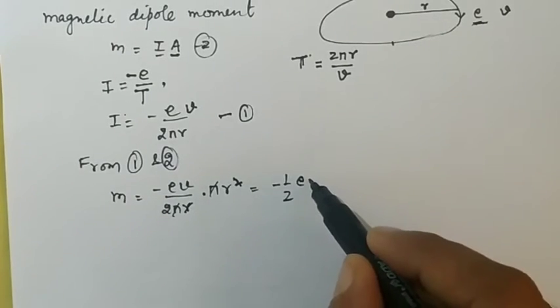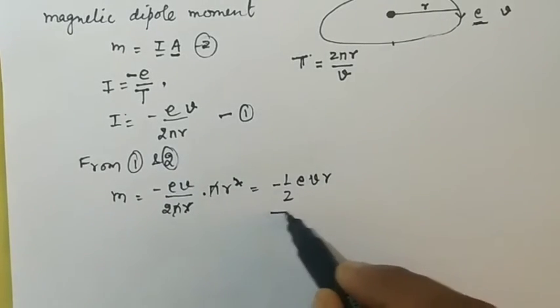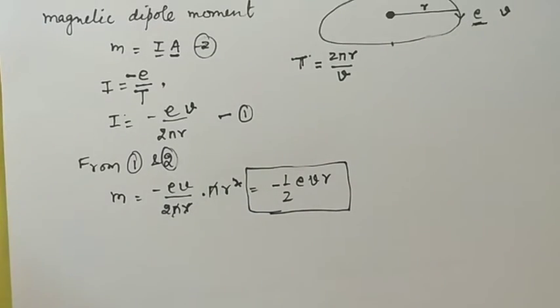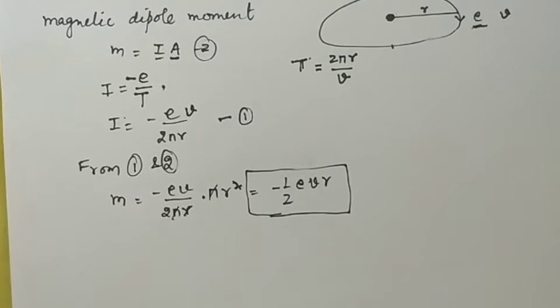If we solve this, we get minus 1/2 eVr. This is your magnetic dipole moment of an electron which is revolving in an orbit in an atom.